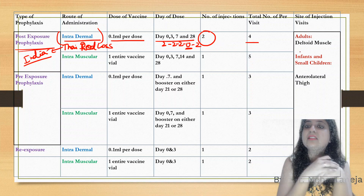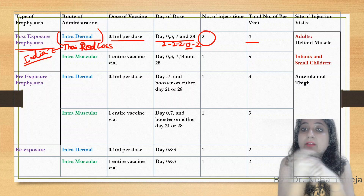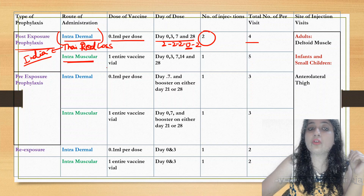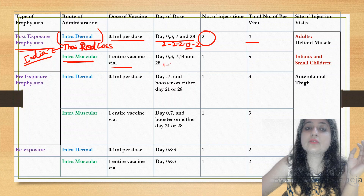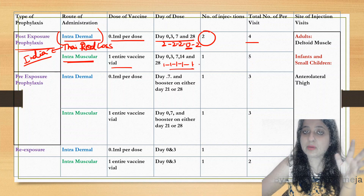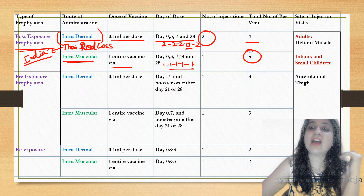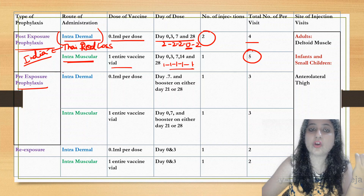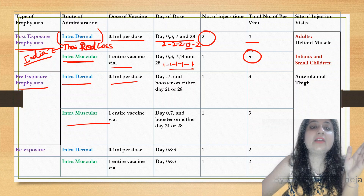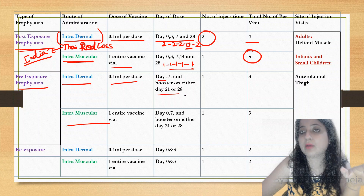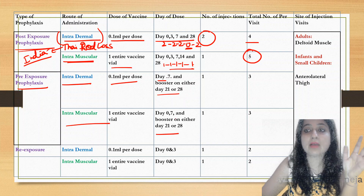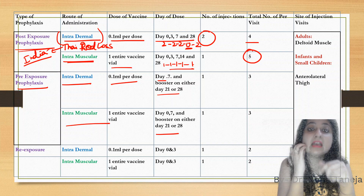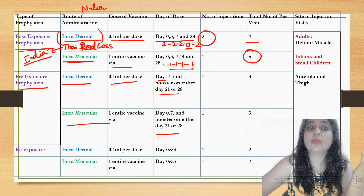For the intramuscular (Essen) regimen, one entire vaccine vial is given on days 0, 3, 7, 14, and 28 — five visits total, one injection each. For pre-exposure prophylaxis — for veterinarians or forest workers — intradermal 0.1 ml on days 0 and 7 with booster on day 21 or 28; or intramuscular on days 0 and 7 with booster on day 21 or 28. Total: three visits.